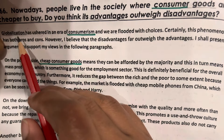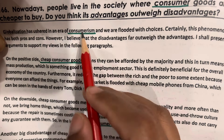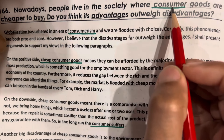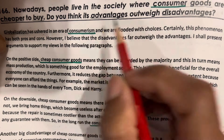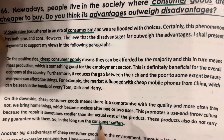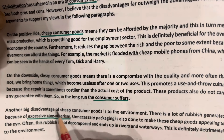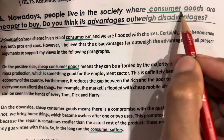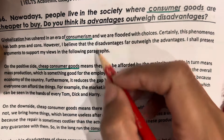First, look at the introduction. Globalization has ushered in an era of consumerism. In the essay prompt it was 'consumer,' in the introduction it is 'consumerism,' and in the body paragraphs: cheap consumer goods, consumer suffers, and excessive consumerism. These are collocations for consumerism — the main word — along with consumerist society and consumer throughout this essay.